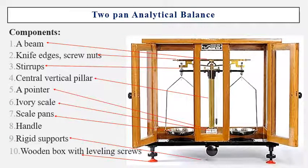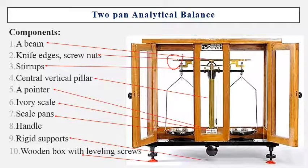This is the two-pan analytical balance. You can see the pan and a beam with two arms of equal length which will swing equally, a knife head with screws, stirrups which support the weighing pans, a central vertical pillar, a pointer with an ivory scale, a handle, rigid supports, and a wooden box with leveling screws which will level the instrument equally.